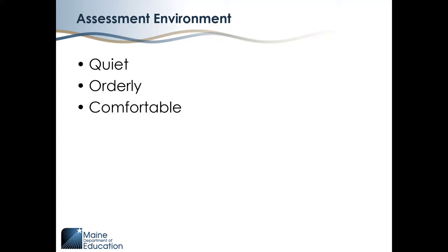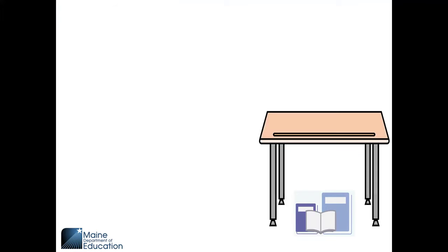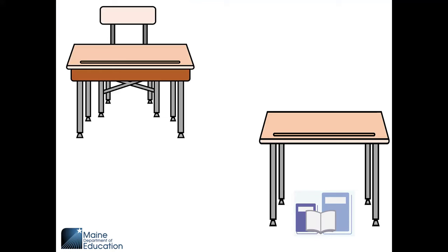It is important to provide an optimal assessment environment that is quiet, orderly, and comfortable. The room should minimize distractions and disruptions for students as they take their assessments. A do not disturb sign should be placed on the door to alert others not to interrupt. The student's workspace should be clear of extra books, binders, and notebooks. Maine DOE recommends storing these extra materials under the student's desk during the assessment administration. If at all possible, students should be spaced apart so that they cannot easily see each other's device screens or paper test booklets. If space is tight, Maine DOE recommends dividers or privacy shields.